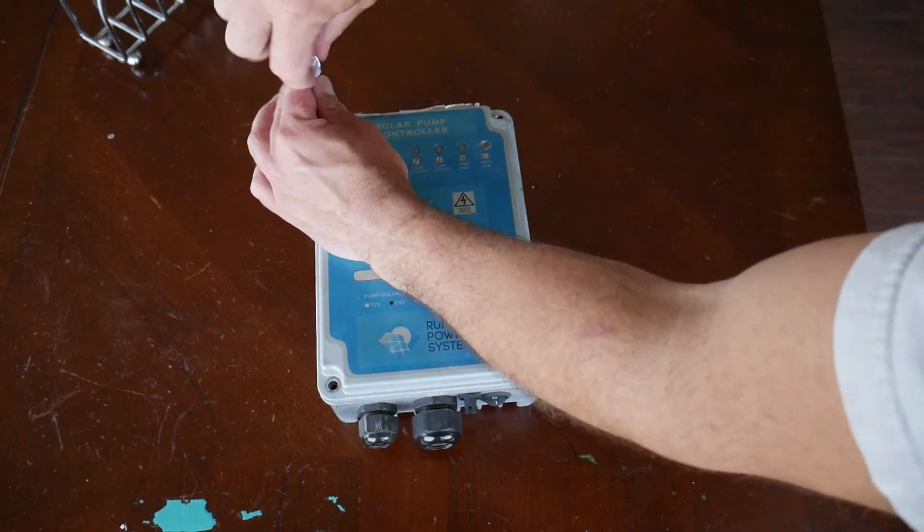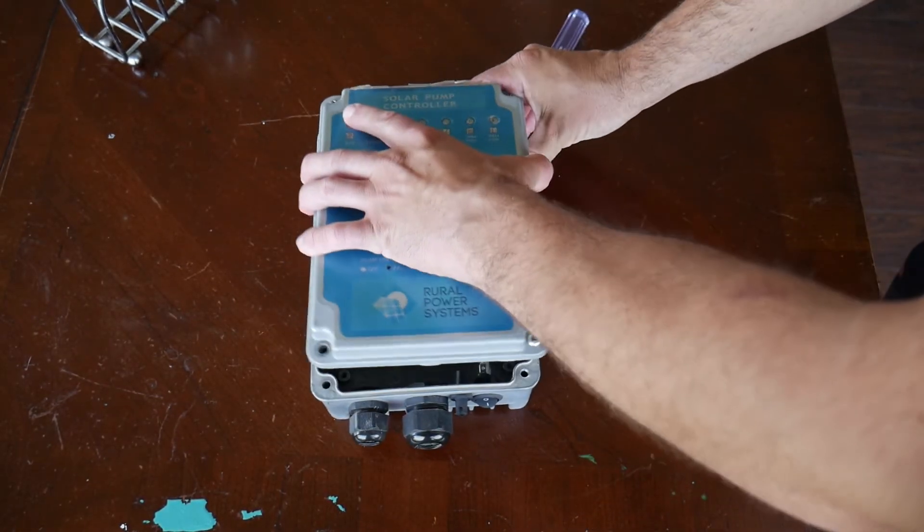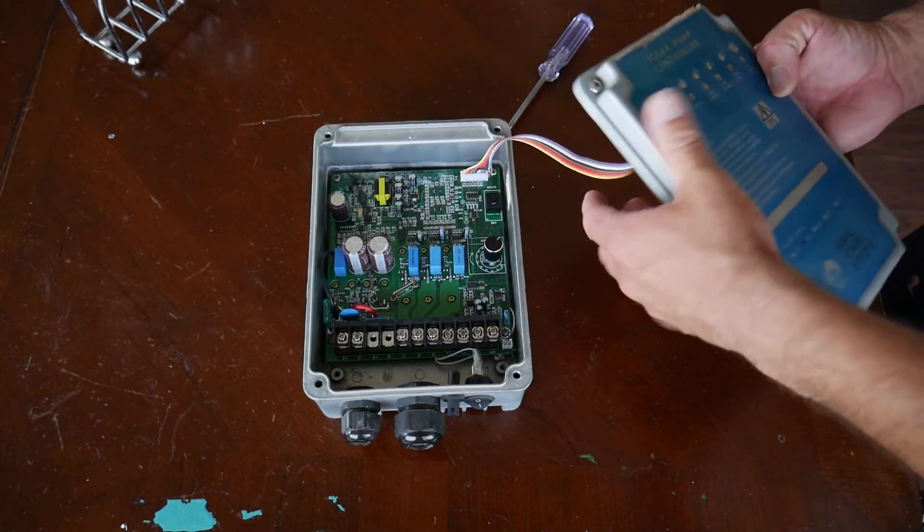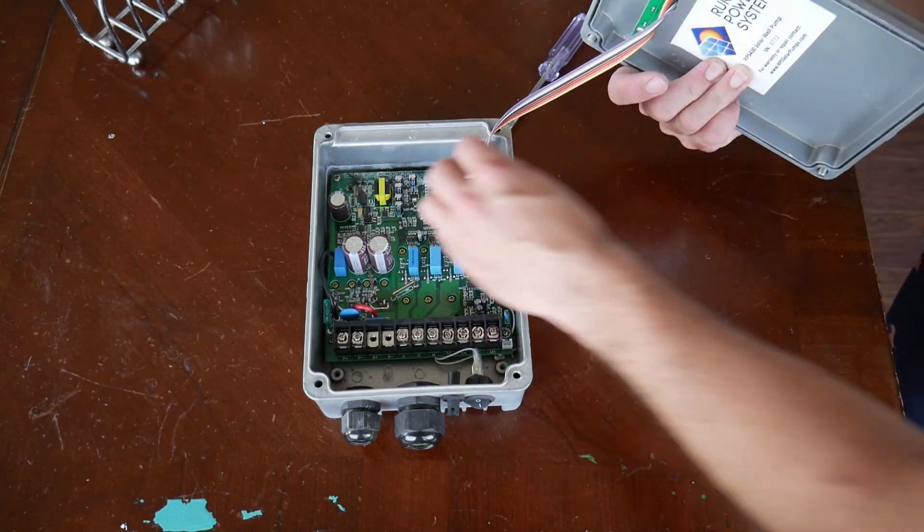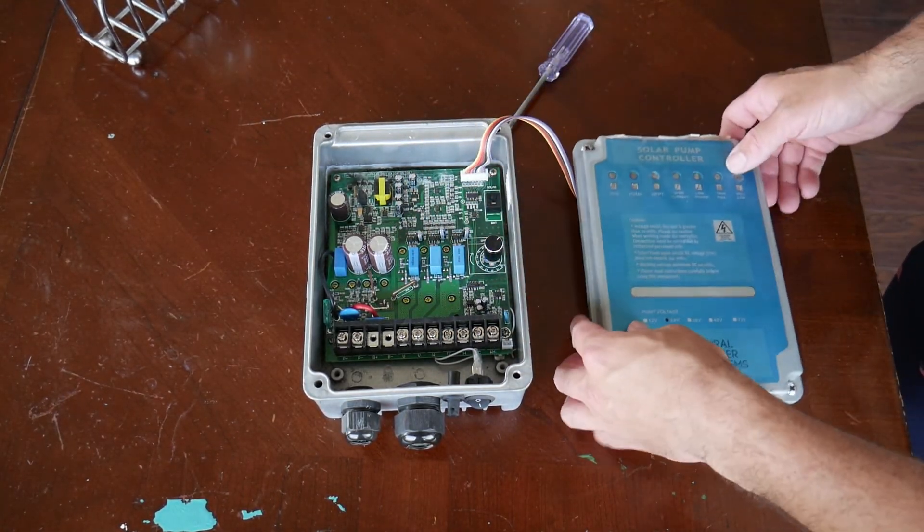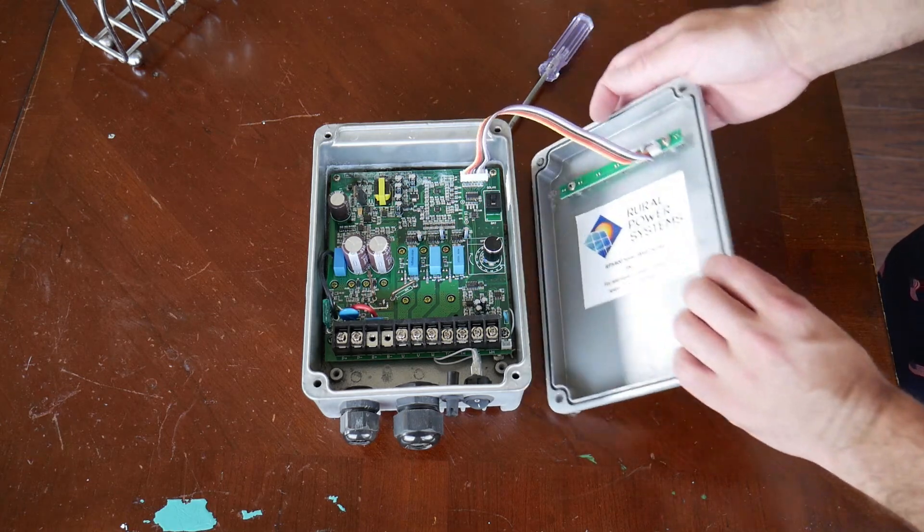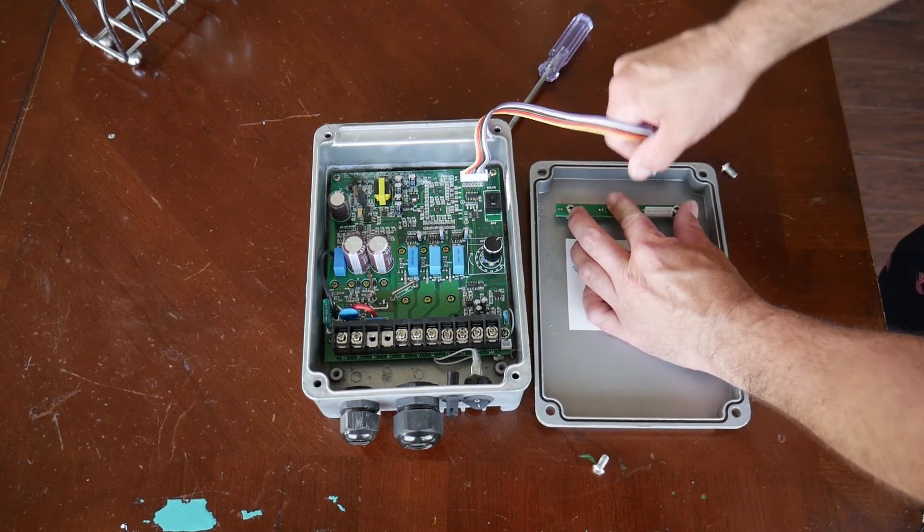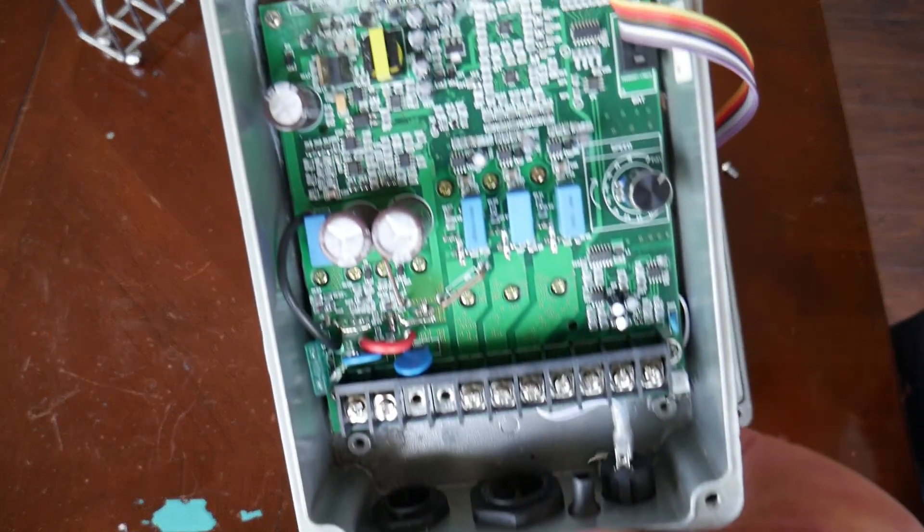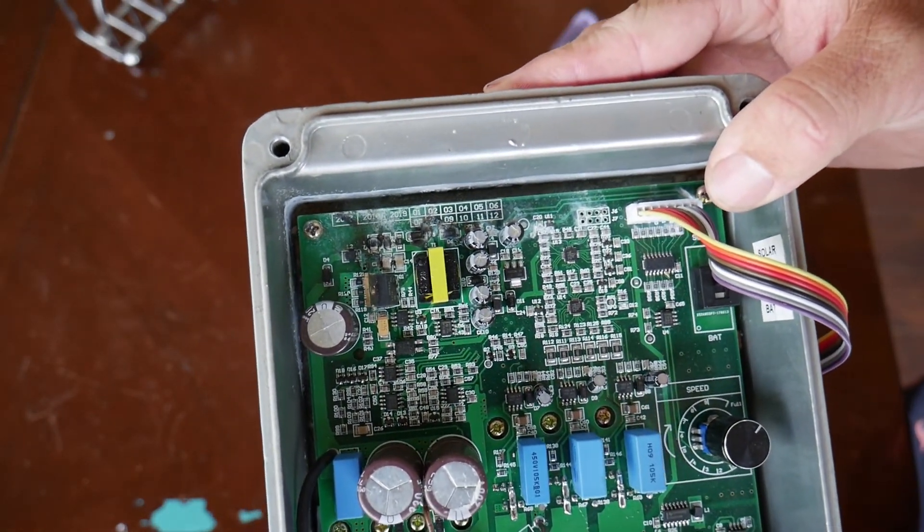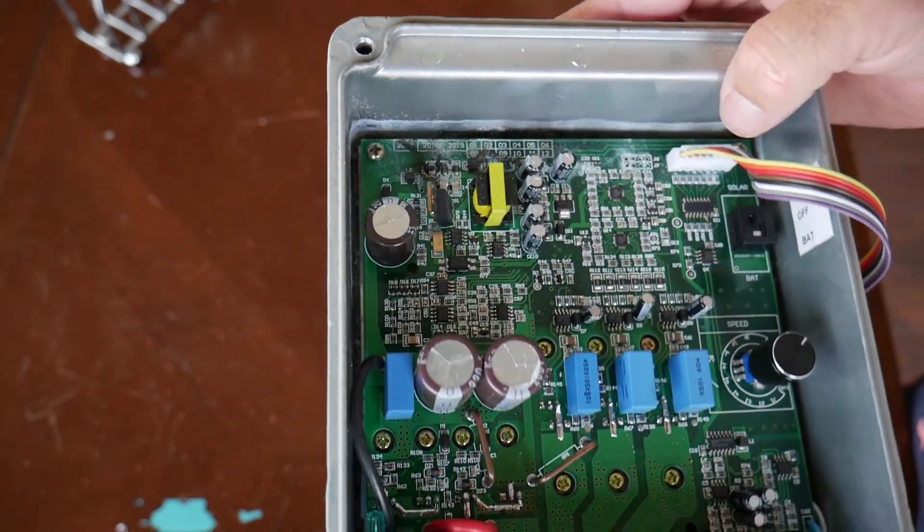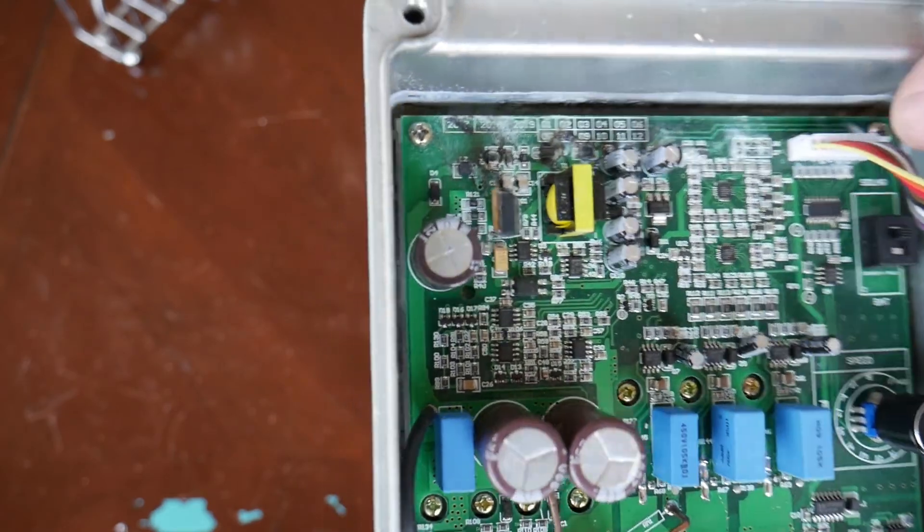Here's my old solar well pump controller and I'm taking it apart because it got water inside. The circuit board fried as you could see here, where the water short-circuited a lot of the surface mount components.